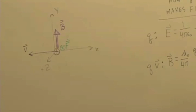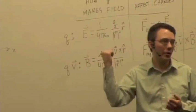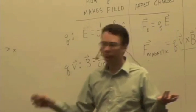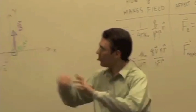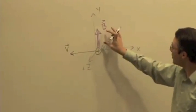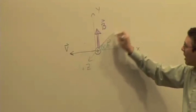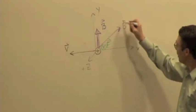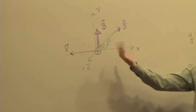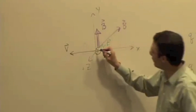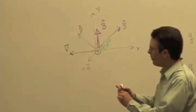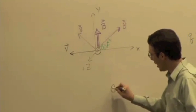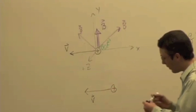Is that the only possible direction for the magnetic field that could cause a force pointing in the negative Z direction? Anything that has a positive Y component, right? So if I have a magnetic field in that direction, V cross B thumb points in. If I have a magnetic field pointing in that direction, V cross B thumb points in.